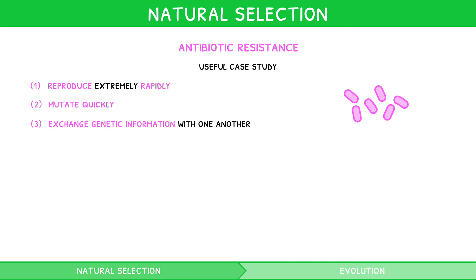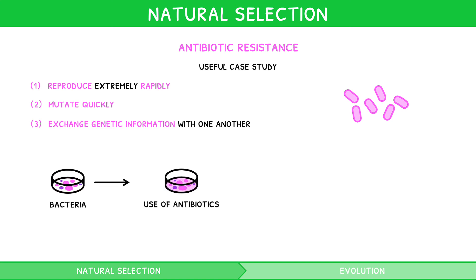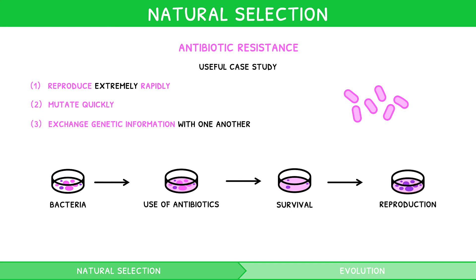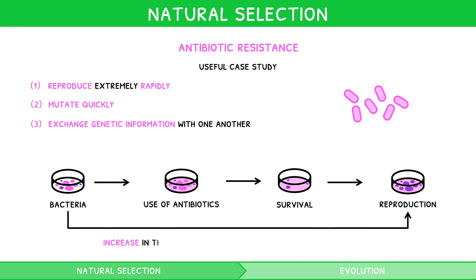Recent widespread use of antibiotics has created competition for survival. Therefore, bacteria more adapted to resist these antibiotics survive. These bacteria then reproduce and pass on their genes. Over time, there is an increase in the proportion of bacteria resistant to antibiotics.